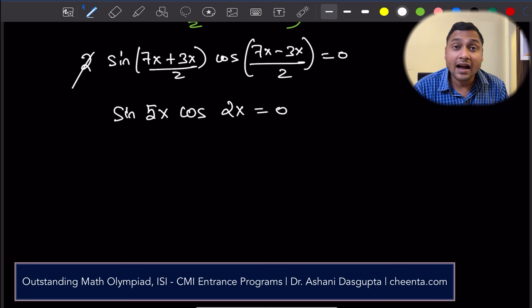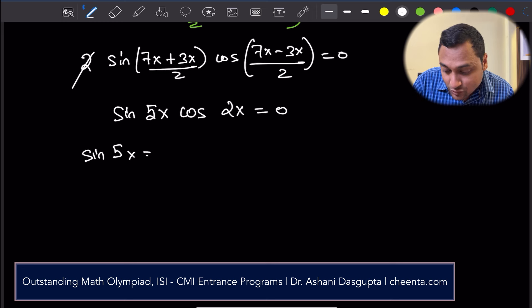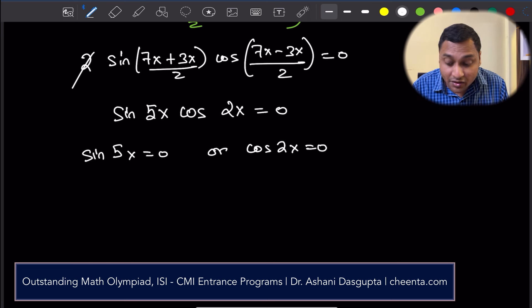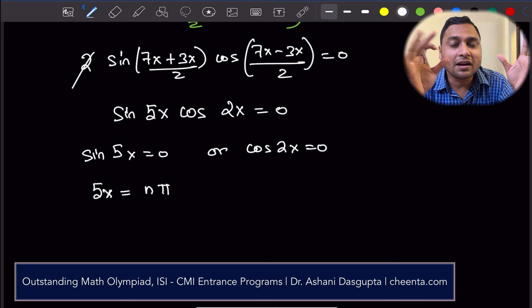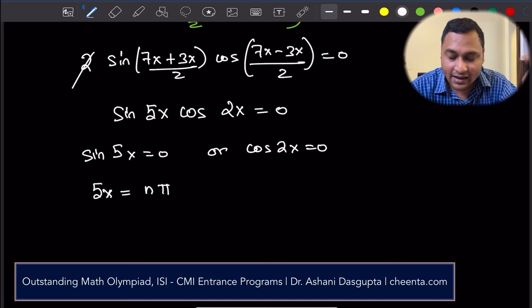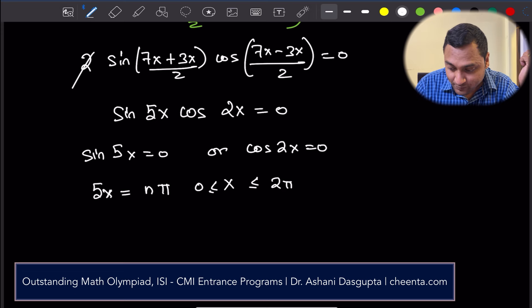Now, from here, I can take an algebraic route. For example, I can say that this is only true if sin(5x) = nπ. nπ means some natural number times π. It's a multiple of π, provided x is between 0 and 2π. And similarly, we can do it for cosine. Actually, let's take this route and see what happens.